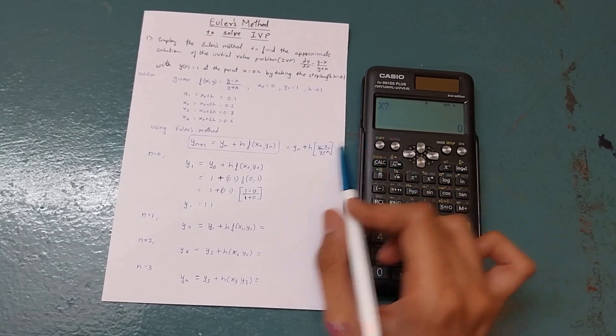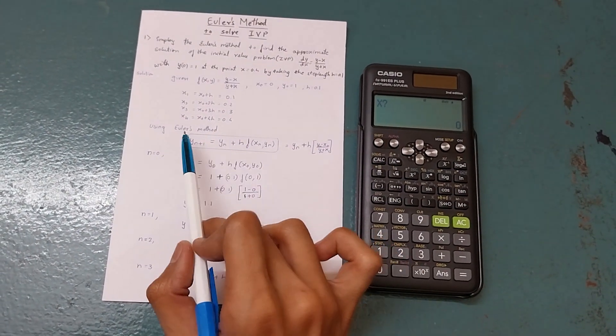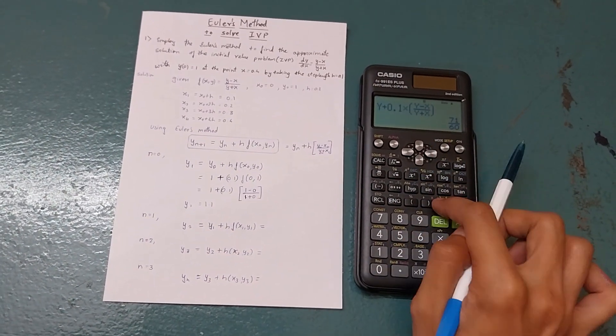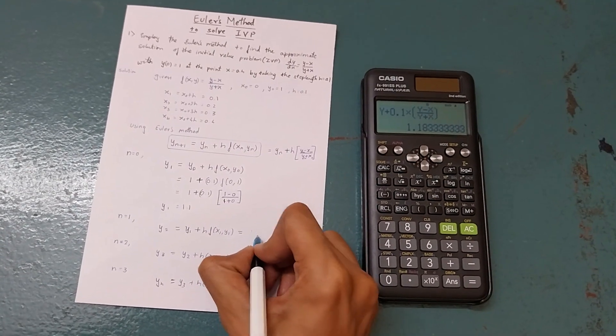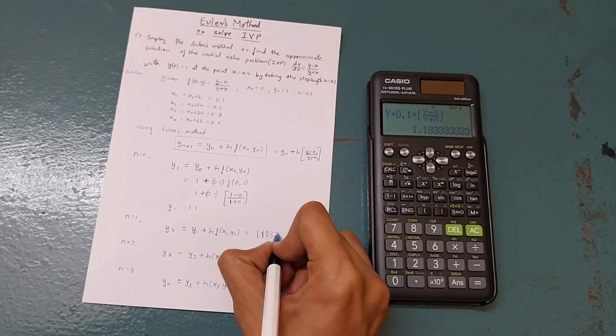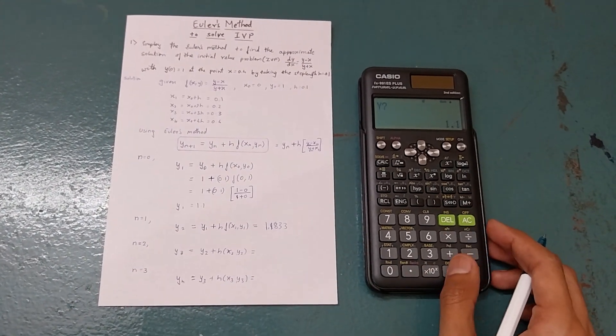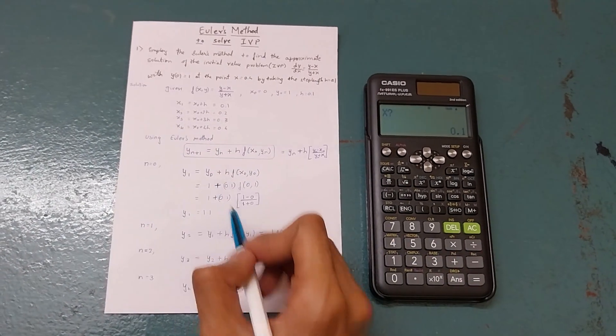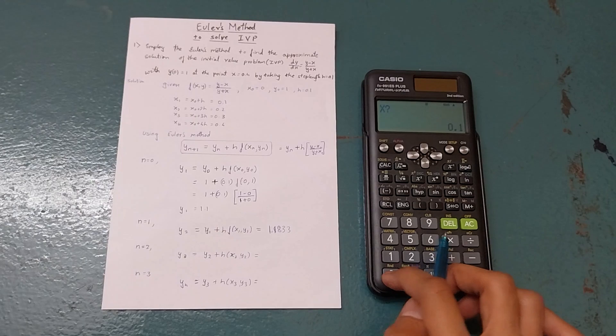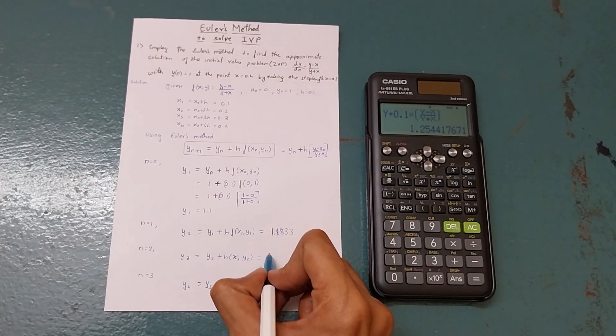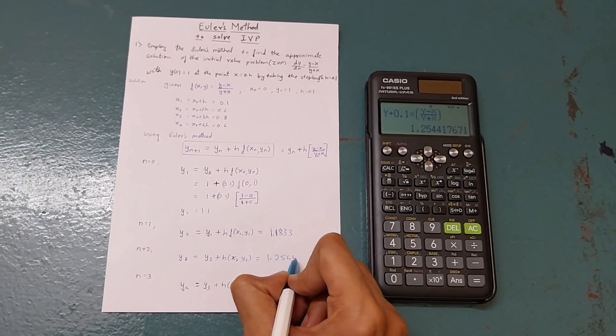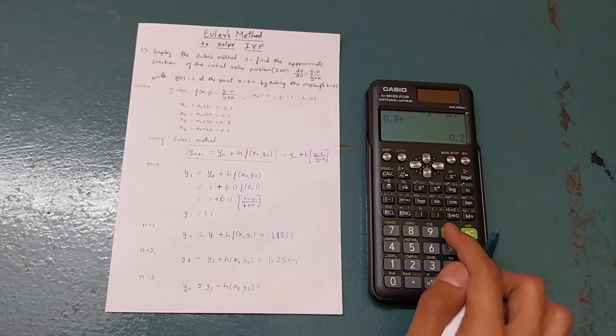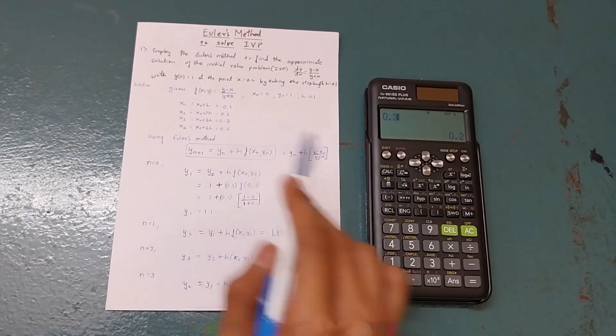Press equals, then x value is x1, so 0.1, and it gives me 1.1833. Now press equals, y value is answer, x value is x2, so 0.2, and you got 1.2544.